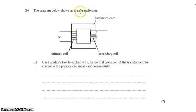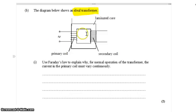The diagram below shows an ideal transformer, so we're going to ignore any energy losses within the transformer. We have a primary side with a certain number of coils and a secondary side with more coils. We're told that the core is laminated.